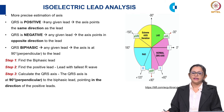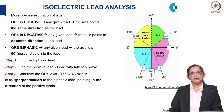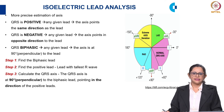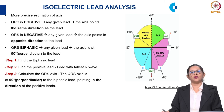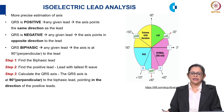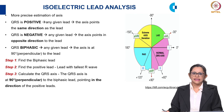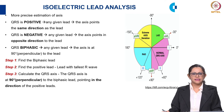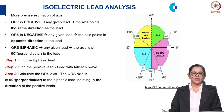The isoelectric lead analysis is a more precise method of estimating the axis. If the QRS is positive at any given lead, the axis will be in the same direction as the lead. If the QRS is negative, the axis will be in the opposite direction. If the QRS is biphasic at any given lead, the axis will be 90 degrees perpendicular to that lead. There are three steps: Step 1 — find the biphasic lead. Step 2 — find the positive lead with the tallest R wave. Step 3 — calculate the axis as plus or minus 90 degrees perpendicular to the biphasic lead, with direction pointing toward the positive lead.